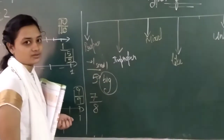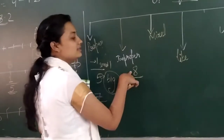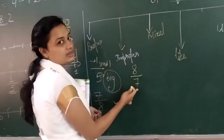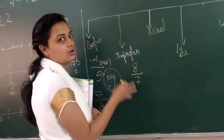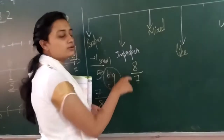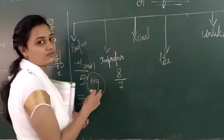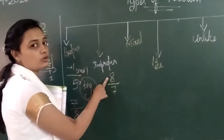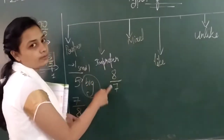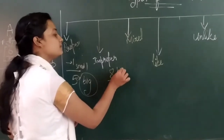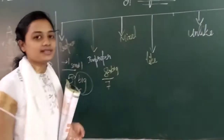Now come to improper fraction. It is just the opposite of proper fraction — my numerator will be bigger than my denominator. My up number will be big, then it is an improper fraction. In a proper fraction the upper number should be less. If the numerator is big, it is not proper — so we call it an improper fraction.